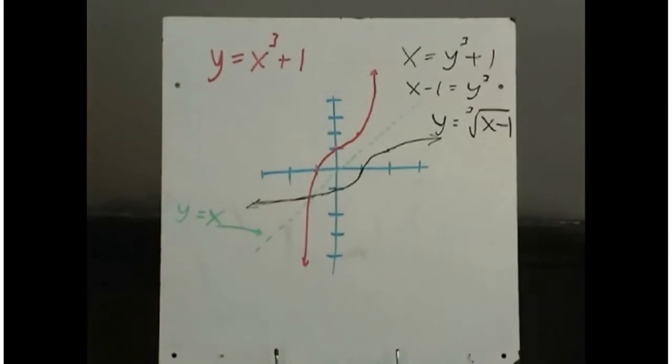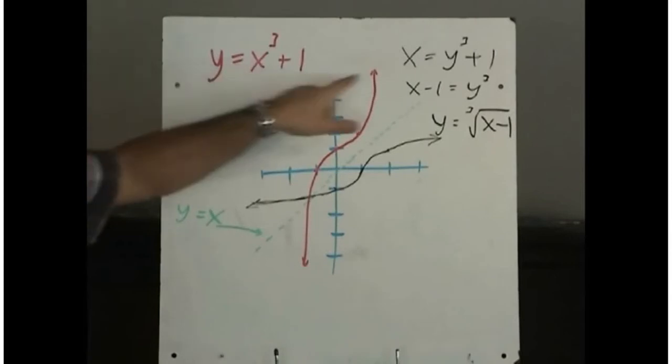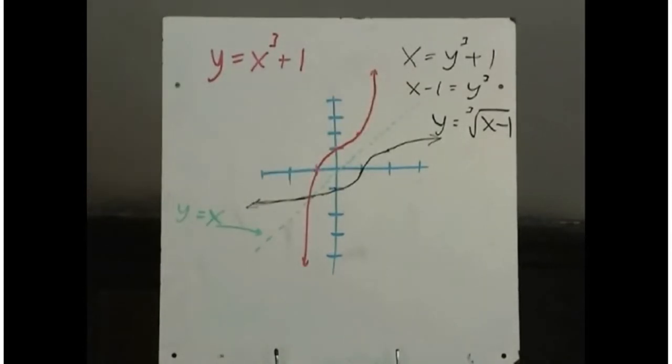So when you take a function and you switch x and y, we call that the inverse. And the effect is the graph gets reflected about the line y equals x.